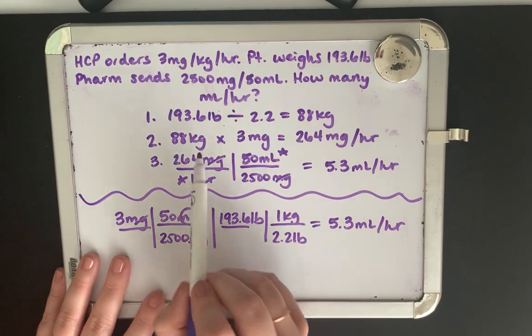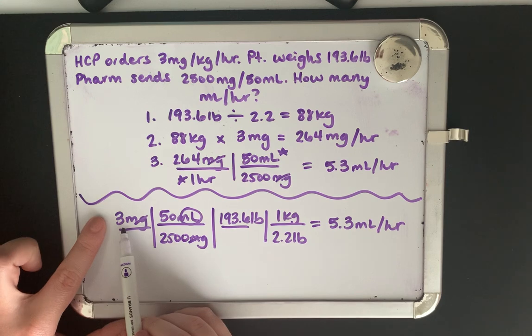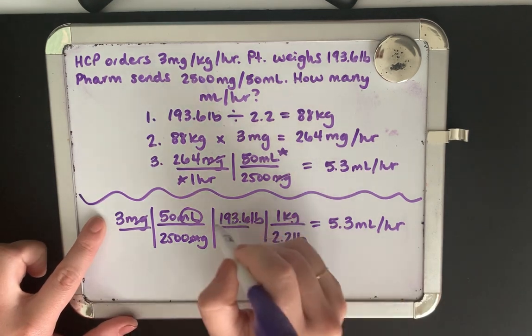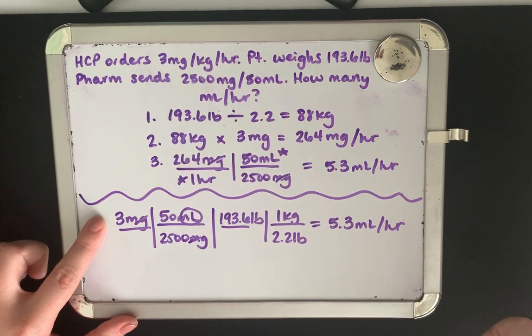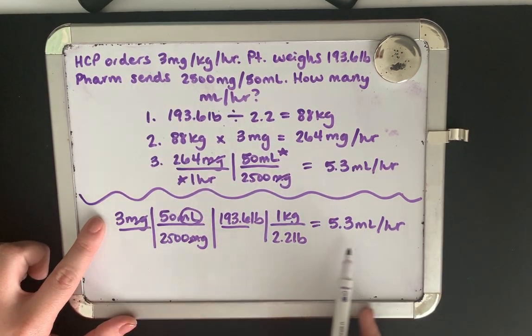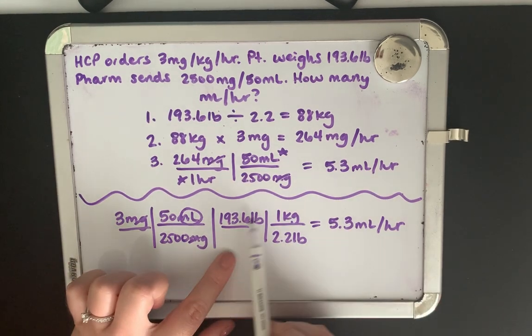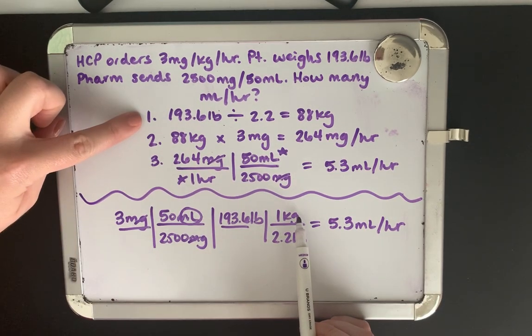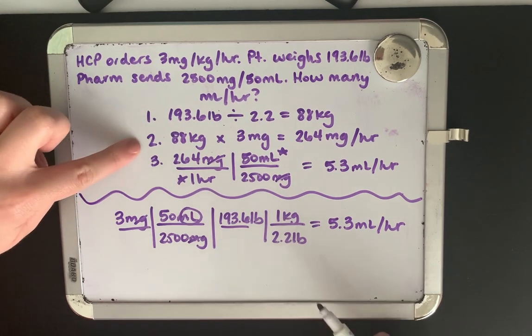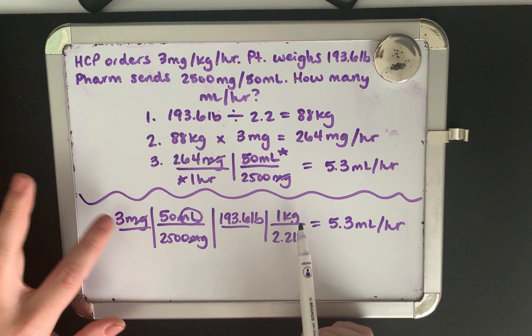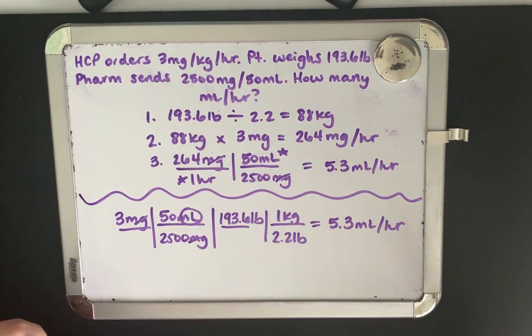So in this one, we didn't have to solve this step because we do that automatically in this equation because we're taking our 3 and we're multiplying by this equation right here, which shakes out to be our 88. So this takes all of these steps and puts them together in one equation. So this right here solves step 1. This right here times this is our step 2. And then those combined multiplied by this here ends up being our mLs per hour.